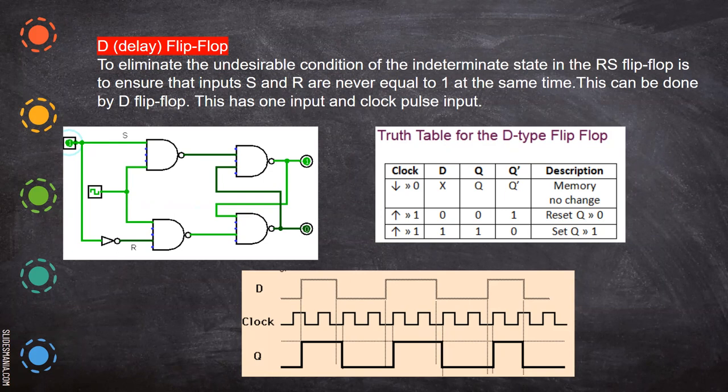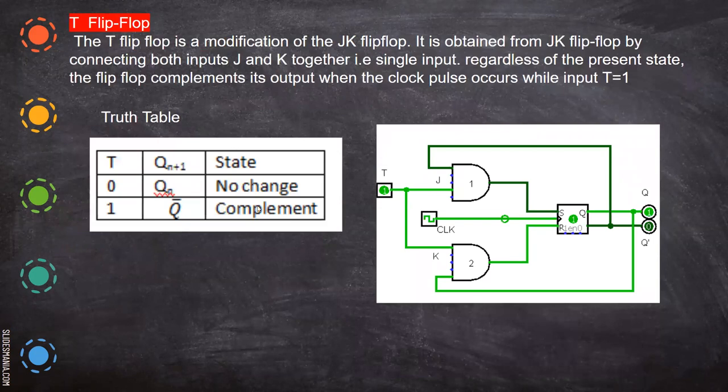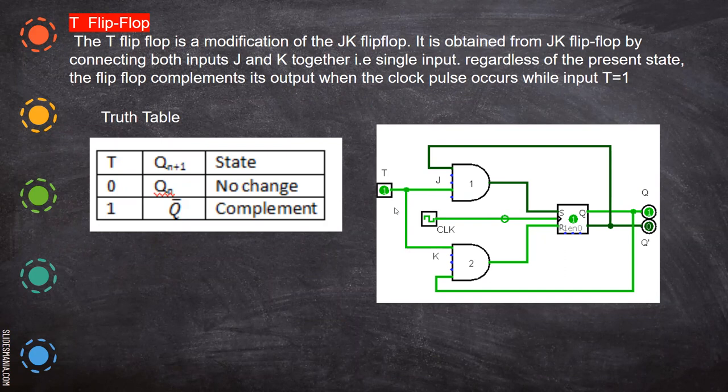In JK flip-flop, you have separate inputs, and this can be eliminated in a T flip-flop where this is a JK flip-flop only, but here both J and K are connected to one, and you achieve results like a D flip-flop.